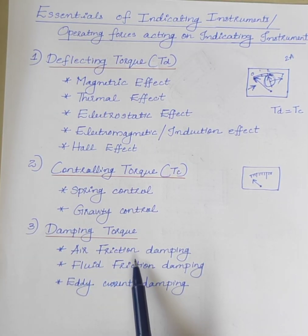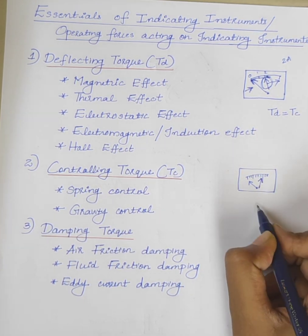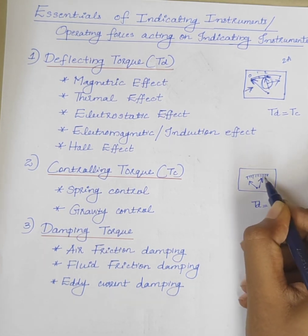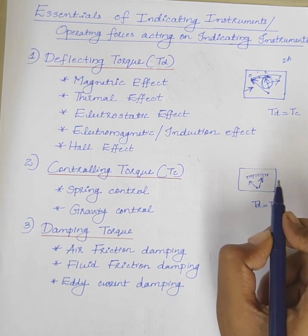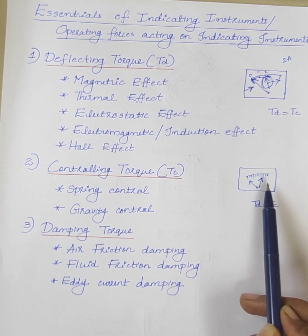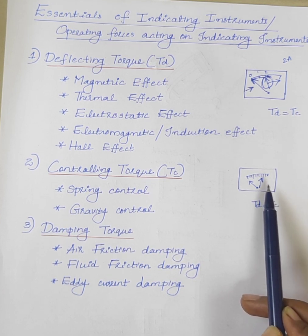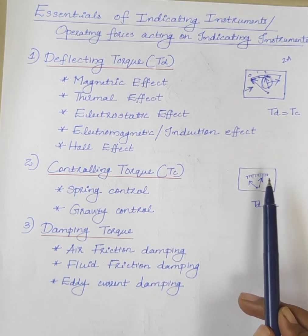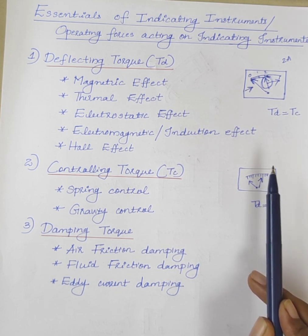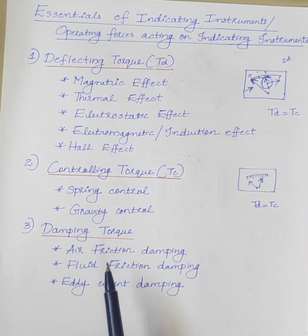Next is the damping torque. When a deflecting torque is applied to the moving system, it deflects and comes to rest when Td is equal to Tc. But the moving system cannot immediately settle at its final position because of the inertia of the moving system. The pointer thus oscillates about its final steady state with decreasing amplitude until its kinetic energy is dissipated in friction. If extra forces are not provided to damp these oscillations, the moving system will take a considerable time to settle to the final position, and hence the time taken for reading will be large. Therefore, damping forces are necessary so that the moving system comes to its equilibrium position rapidly and smoothly without any oscillations.